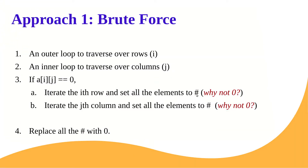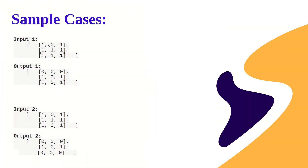Why are we setting elements to '#' and not directly to zero? The reason is: suppose we set cells to zero immediately. We are only supposed to change rows and columns where the original matrix has a zero. But if we set cells to zero during traversal, we will encounter those newly-set zeros later in our loop and mistakenly treat them as original zeros, causing incorrect rows and columns to also be set to zero.